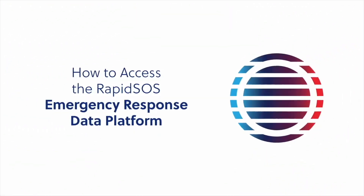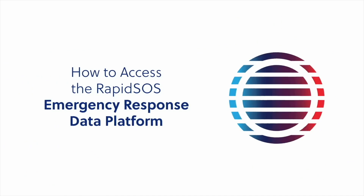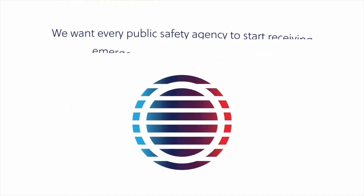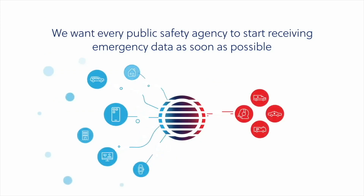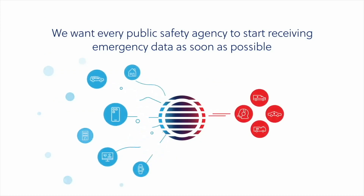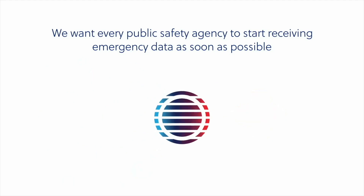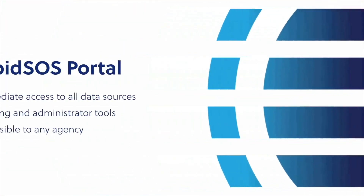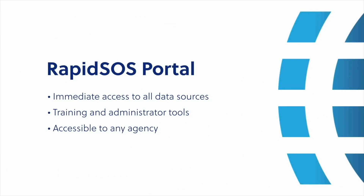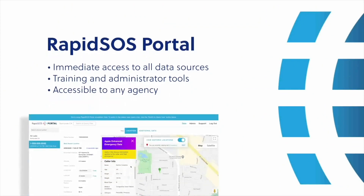How to Access the Emergency Response Data Platform. Any public safety agency can access life-saving emergency data through the RapidSOS Emergency Response Data Platform. There are two ways of doing so. RapidSOS Portal is a powerful web-based tool that enables you to manage emergencies and access location and supplemental data for every call in your jurisdiction.